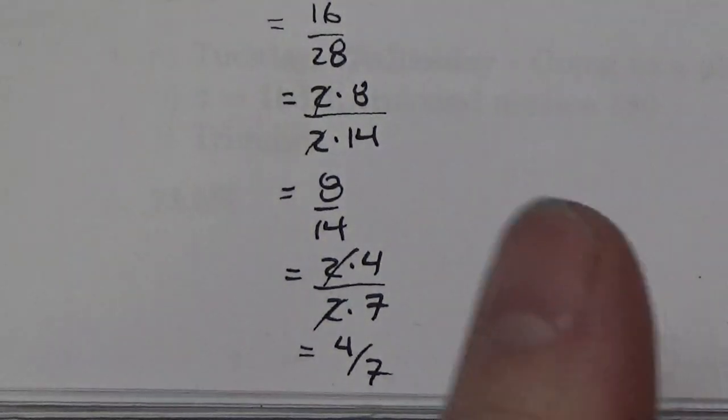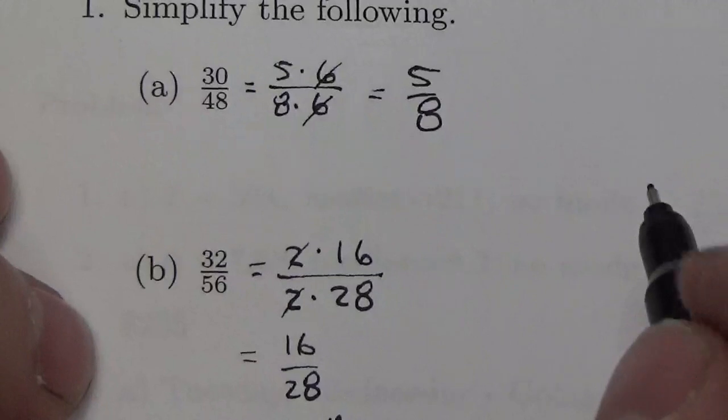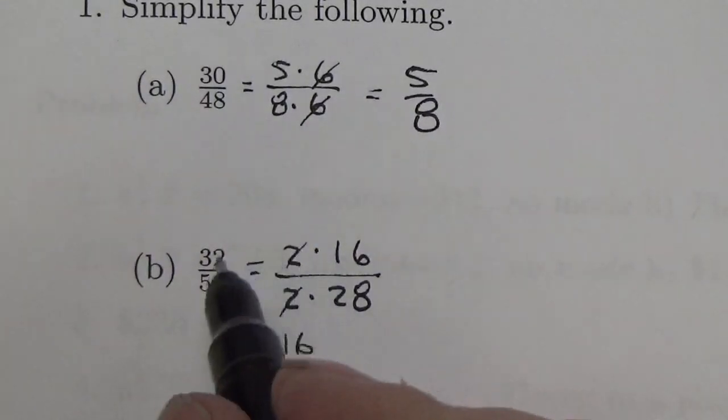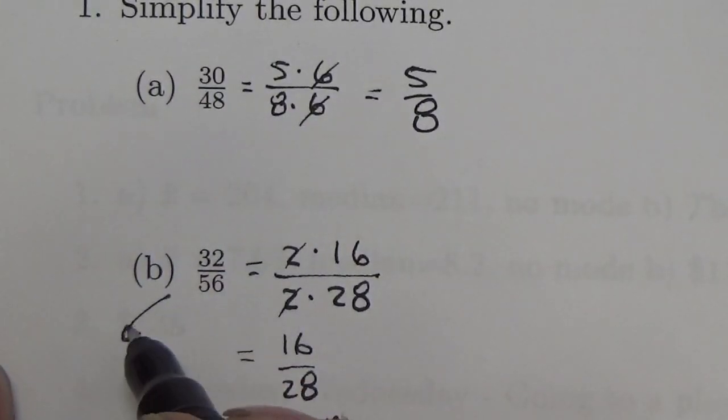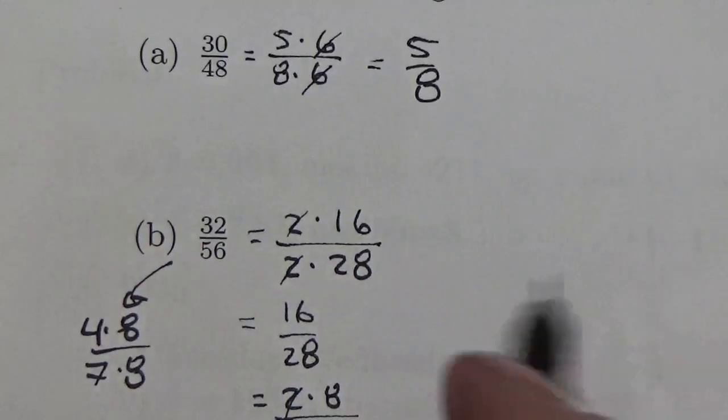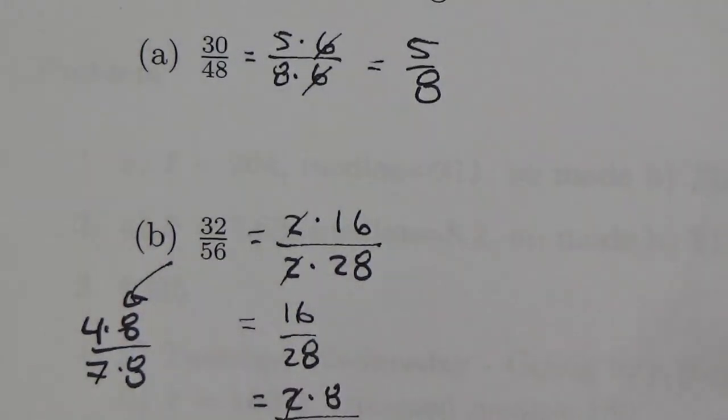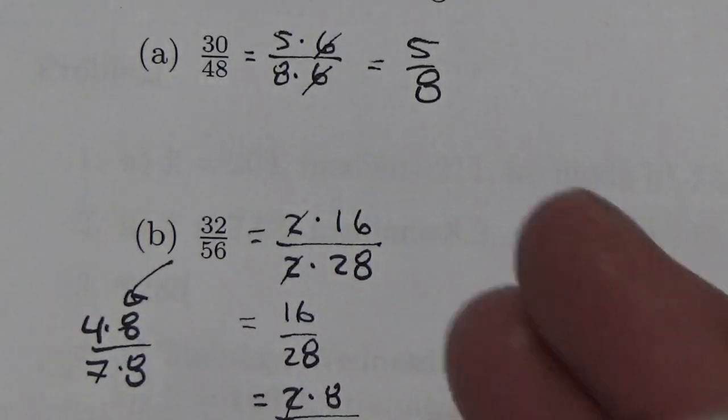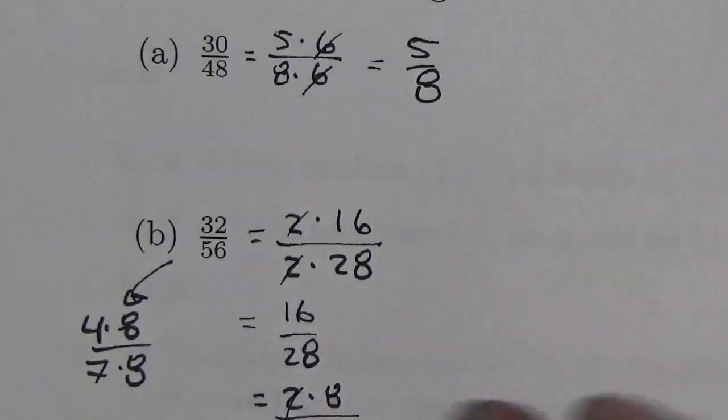Now, I could have jumped to that right away by just recognizing that 32 over 56, I could have written that as 4 times 8 over 7 times 8. And then just cancel the 8s. But if you can't see that, that's okay. That just means the path is a little bit longer. You still get there.